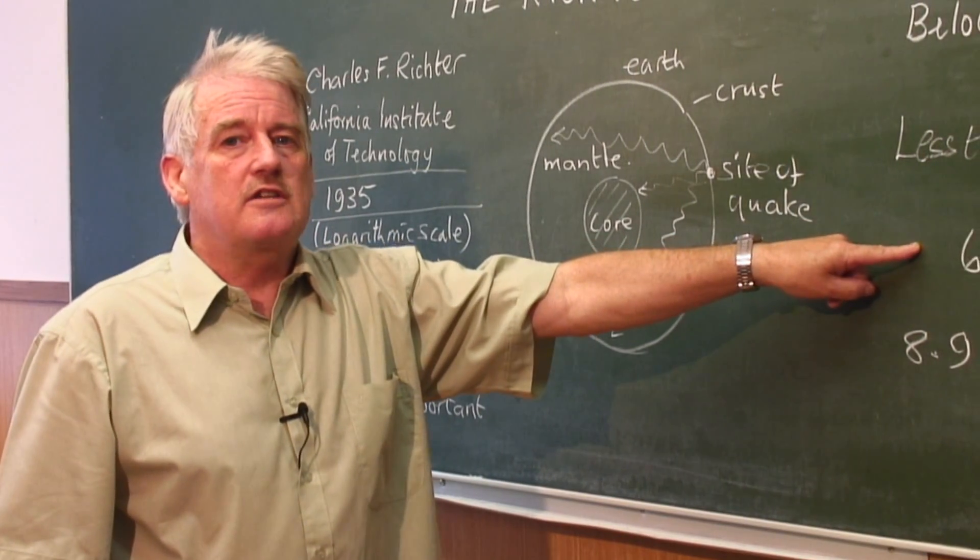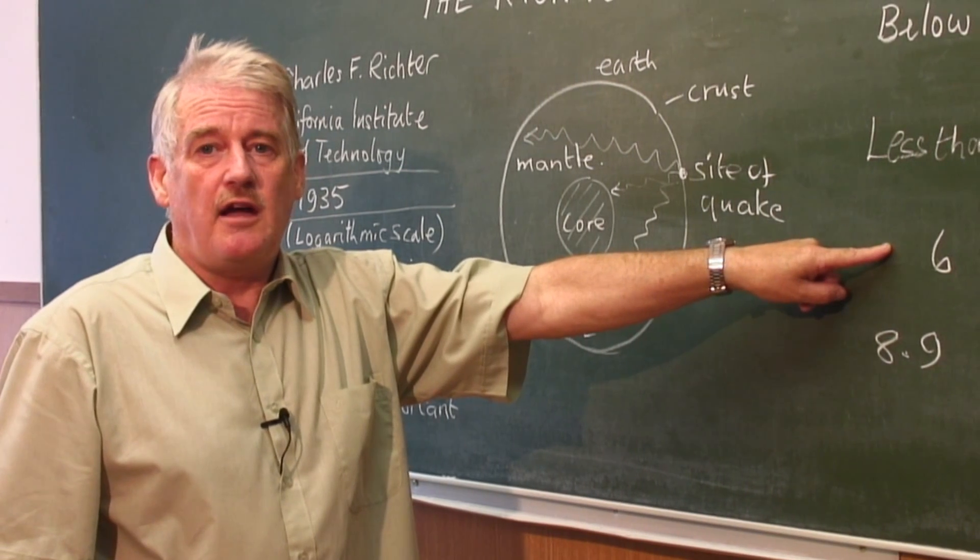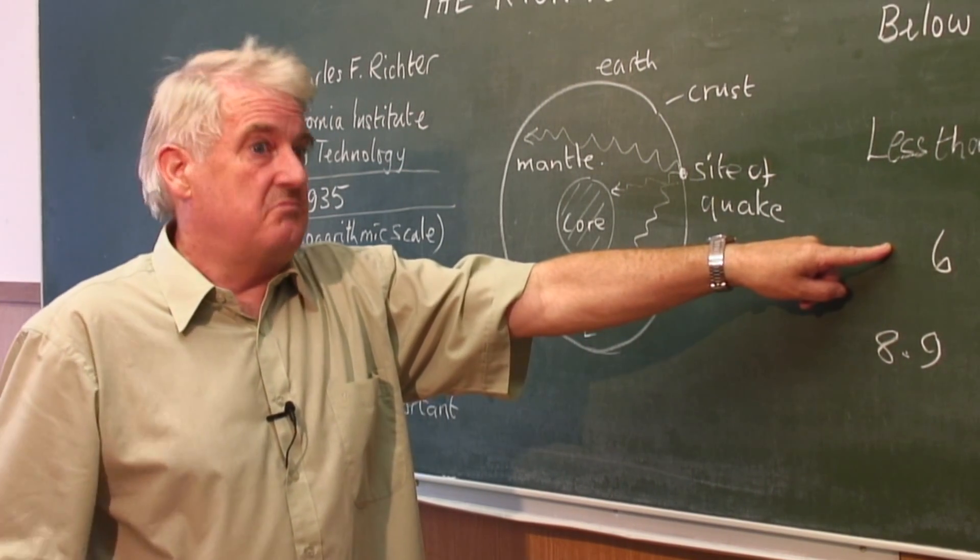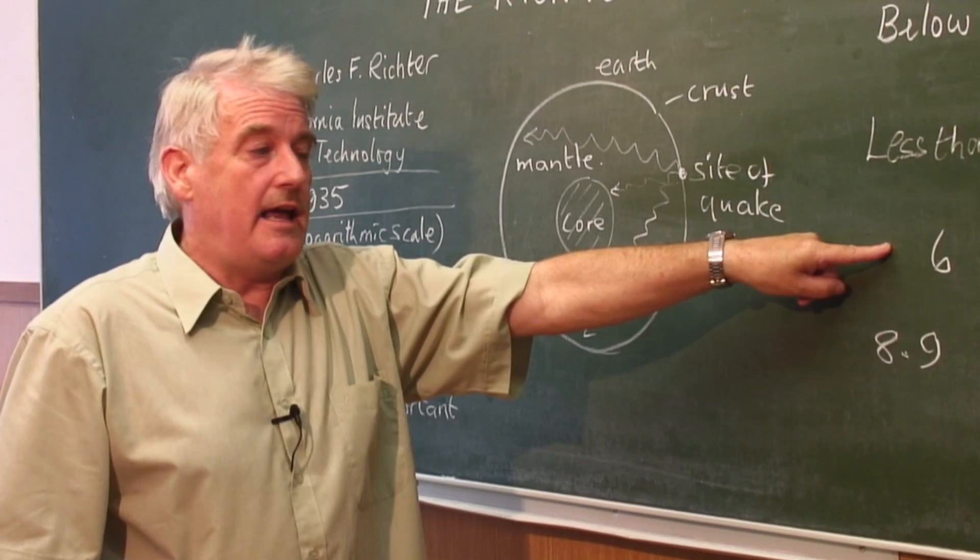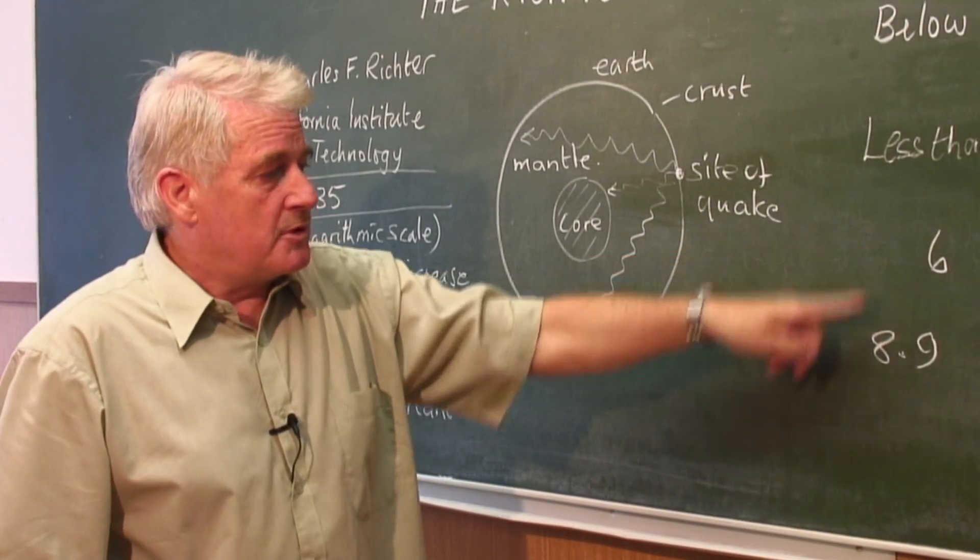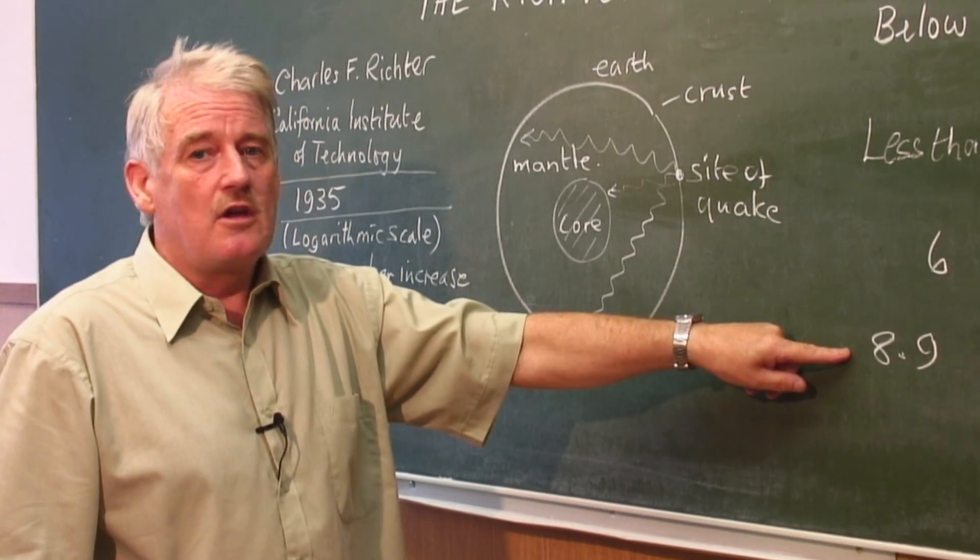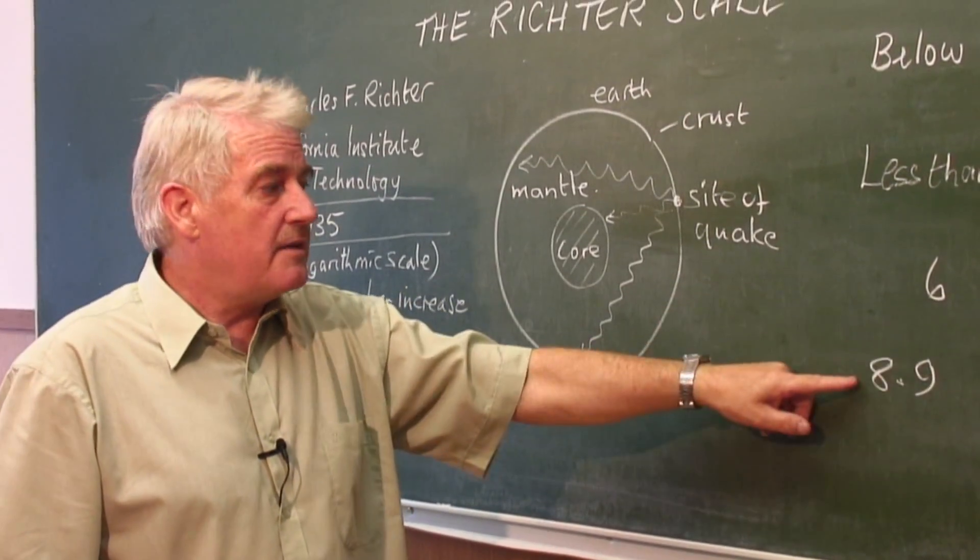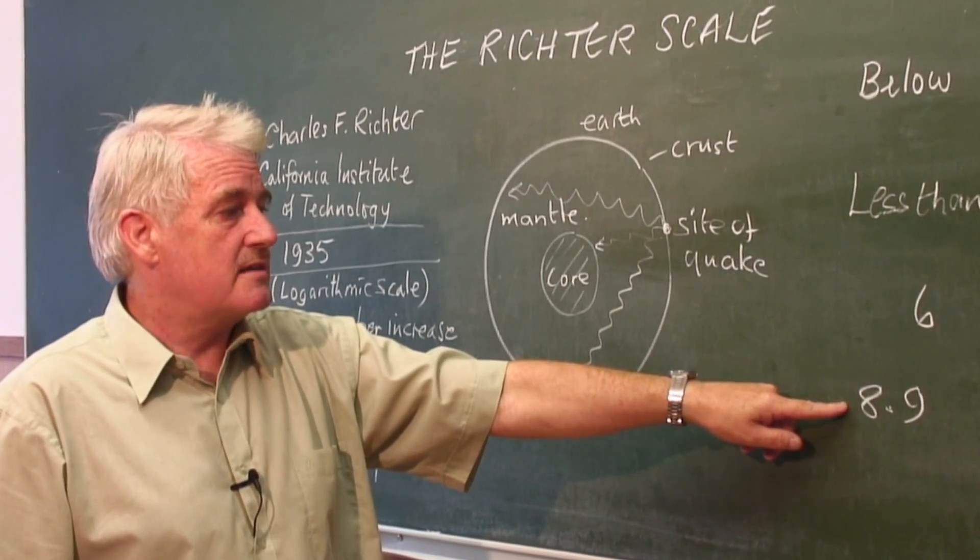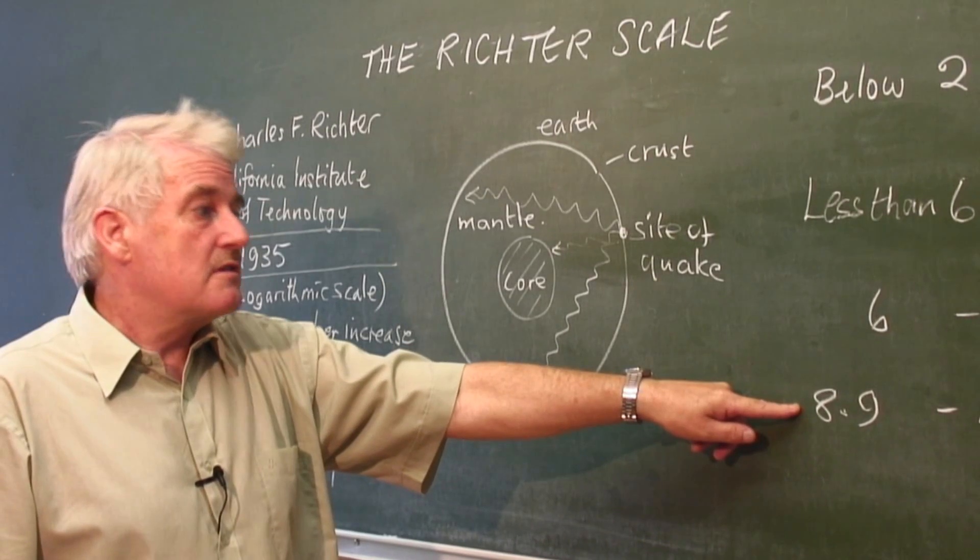At six, we start to get significant damage. That is, if it's in a built-up area, houses, poor housing might collapse. There might be cracks in houses, but between six and 8.9, these are the real disaster areas, because any buildings, even well-protected buildings, at 8.9 will suffer considerable damage.